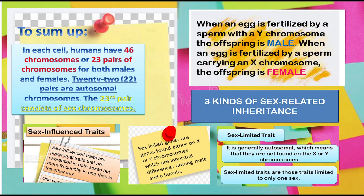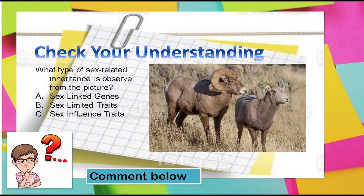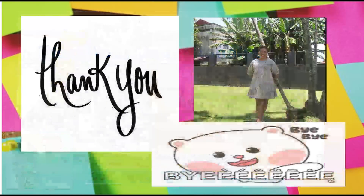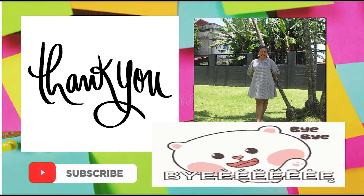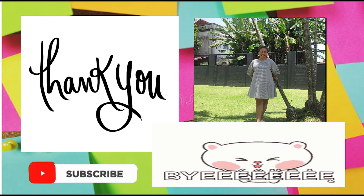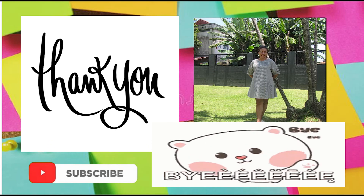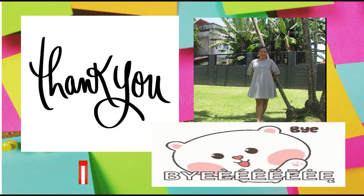Did you understand? Let's check your understanding. What type of sex-related inheritance is observed from the picture? A. Sex-linked genes, B. Sex-limited traits, C. Sex-influenced traits. Comment below if you know your answer. That's all for today. Goodbye!